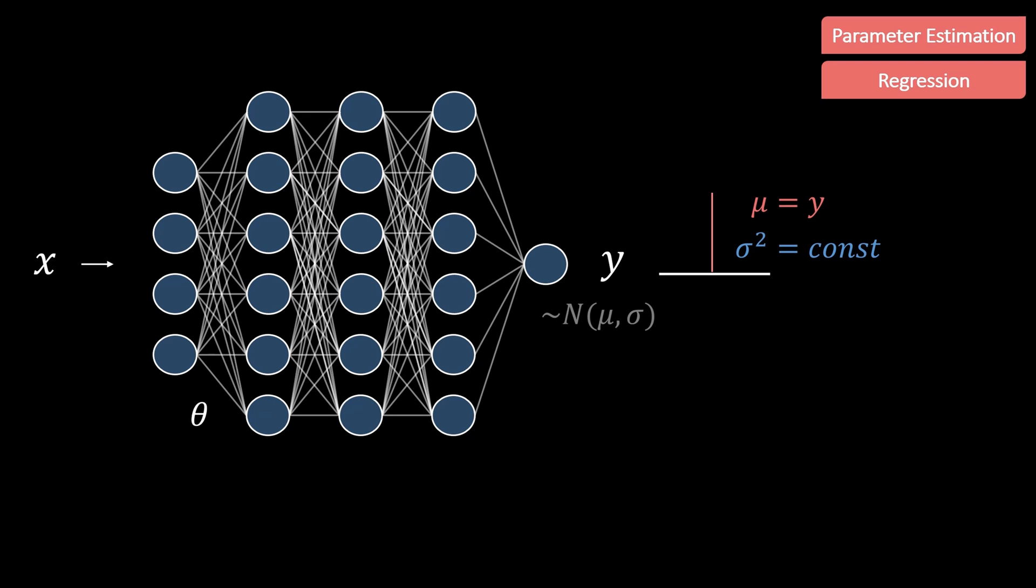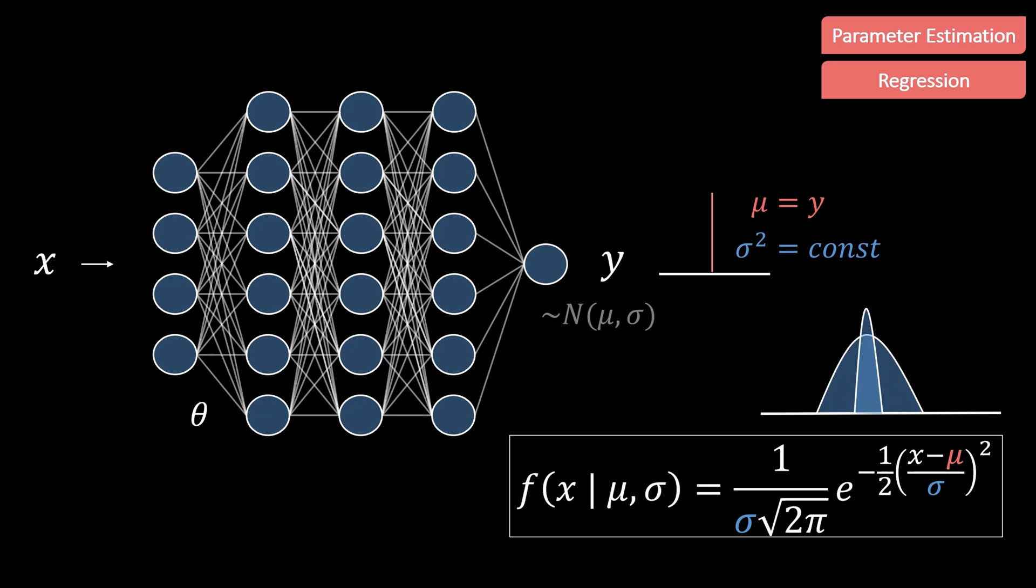This means we output a point estimate and assume a fixed variance for each sample. Now instead of only predicting the mean, we could also try to predict more parameters of this distribution. The Gaussian normal distribution can be expressed by this formula. As you can see, there are two highlighted parameters that define the distribution, which are the mean mu and the standard deviation sigma, which is the square root of the variance. Depending on those, the distribution will have a different shape. When we only predict a point estimate, the blue terms are constant and with some additional reformulations, we end up with nothing else but the mean squared error.